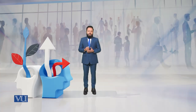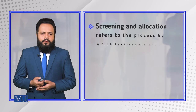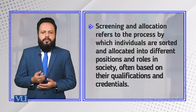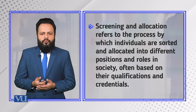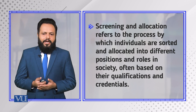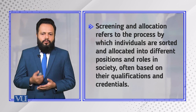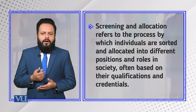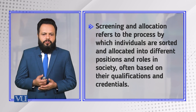Dear students, in this module we are going to discuss the process of screening and allocation from a conflict perspective. Screening and allocation refers to the process by which individuals are sorted and allocated into different positions and roles in society, often based on their qualifications and credentials.